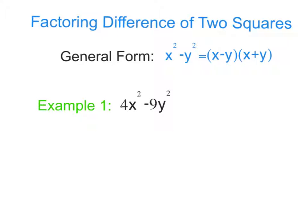So the general form is x squared minus y squared. And what we do is we take the square root of each of the terms. So the square root of x squared equals x, the square root of y squared equals y. And then we just take those two numbers and add and subtract them and multiply their products, like we have here: x minus y times x plus y.